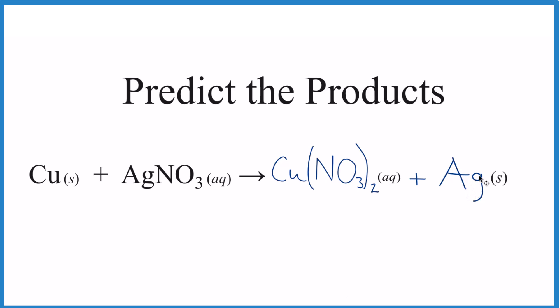This reaction is actually not balanced. If we want to balance it we could put a 2 here so we'd have two nitrates to balance these two nitrates, but then we'd have two silver so we better put a 2 here and that's the balanced equation.